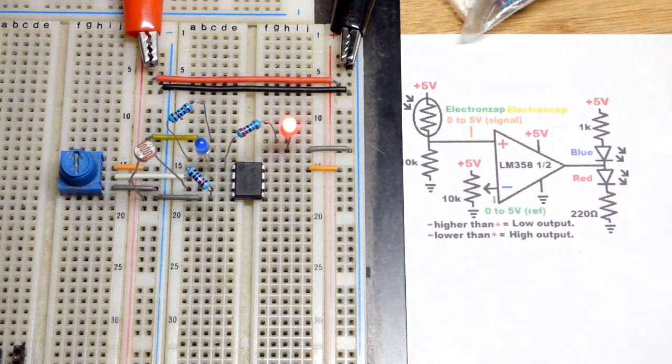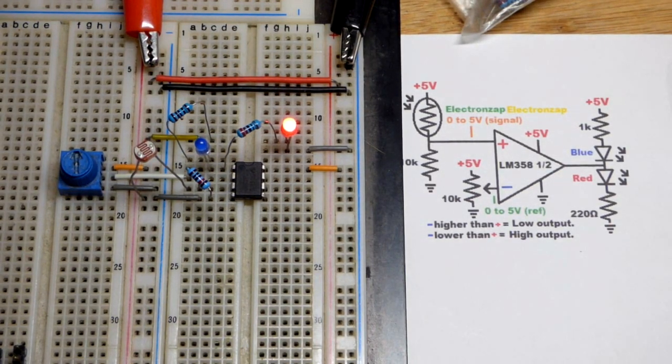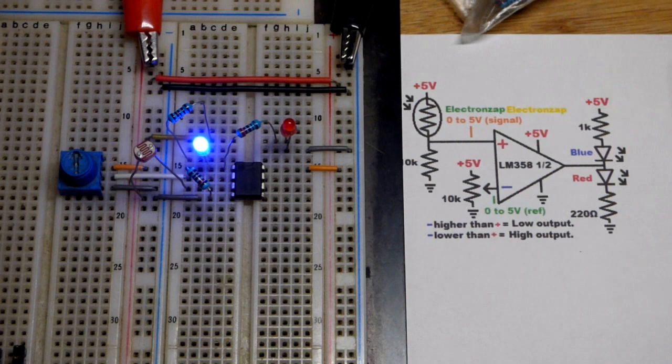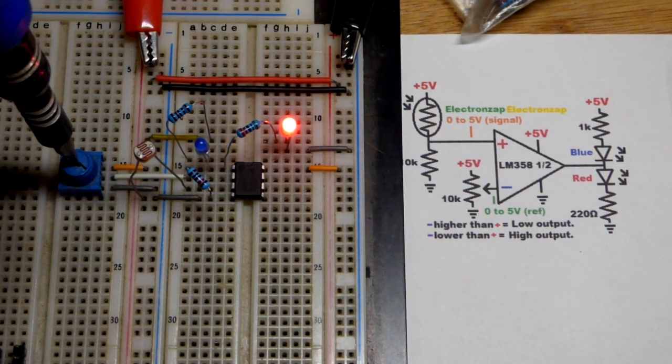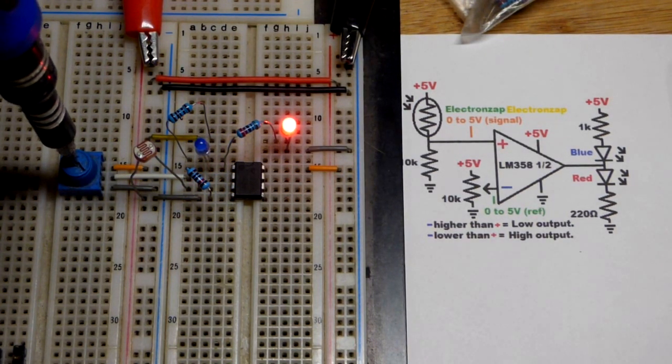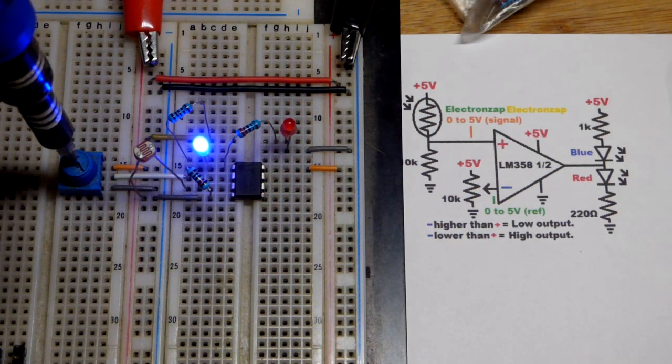If I go even darker, of course, the blue LED stays on. Now I'm going to set the lamp to the lowest setting. Now we'll make it red at the lowest setting and we will go up a little bit until we get to blue.